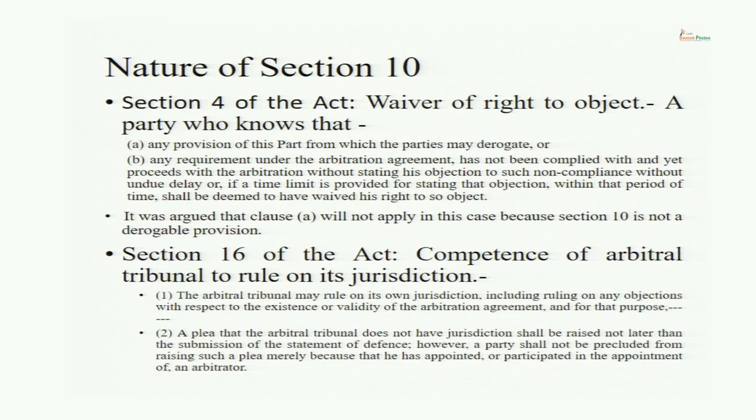Only the breach of derogable provisions can be waived. Breach of mandatory provisions cannot be waived. Any award passed on the basis of breach of a mandatory provision is not going to sustain and can be easily set aside. What can be waived is breach of derogable provisions and breach of terms of the arbitration agreement. If a party knows it is a breach of a derogable provision or a term of the arbitration agreement and still participates, it is deemed he has waived his right to object — within the prescribed timeline, or within a reasonable time period if no timeline exists.